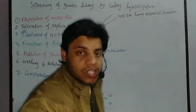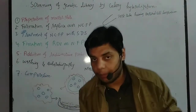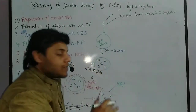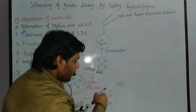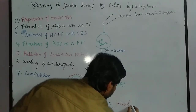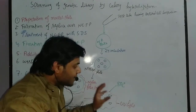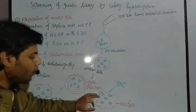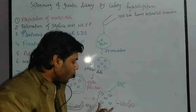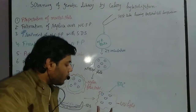After SDS treatment, we fix all these colonies onto the nylon filter paper. We do this by placing the nylon filter paper on a surface at 80°C temperature, or by exposing the filter paper to UV light. By either of these methods, all the colonies become completely fixed on the filter paper. Note that during SDS treatment, not only are the cell membranes ruptured, but the double-stranded DNA is also denatured into single-stranded DNA.